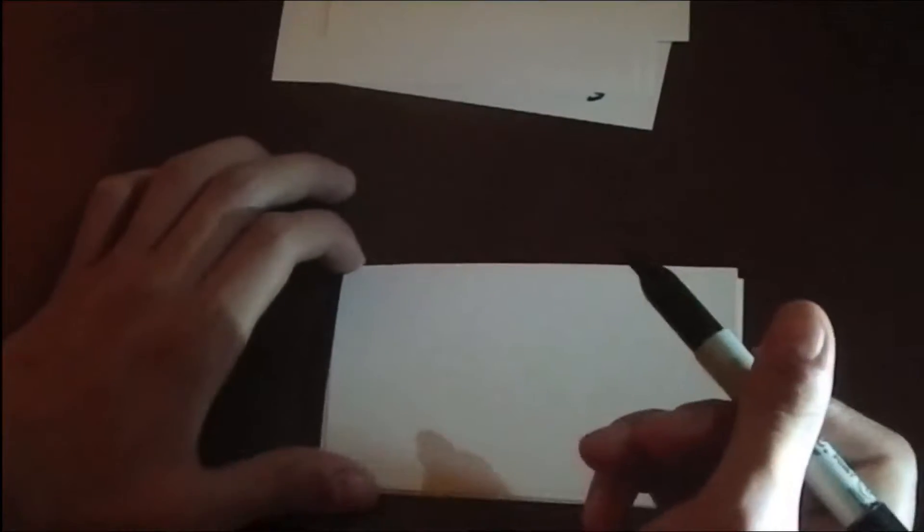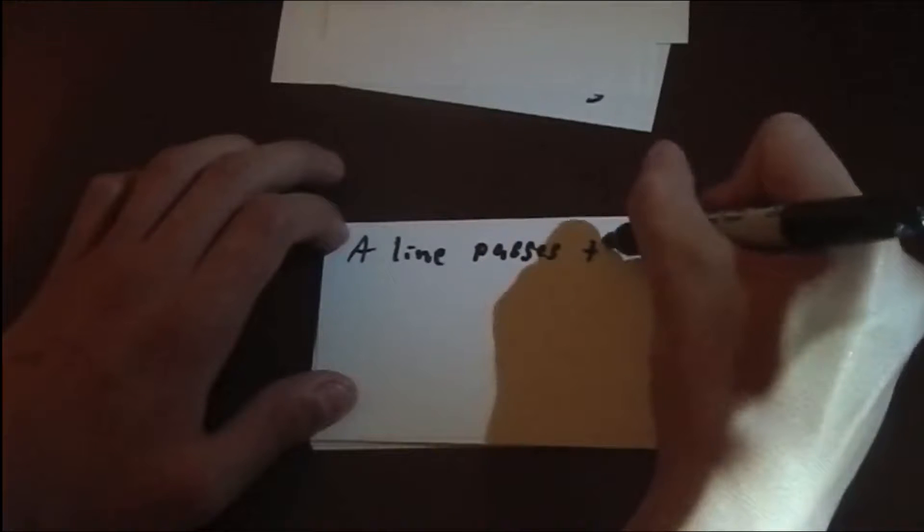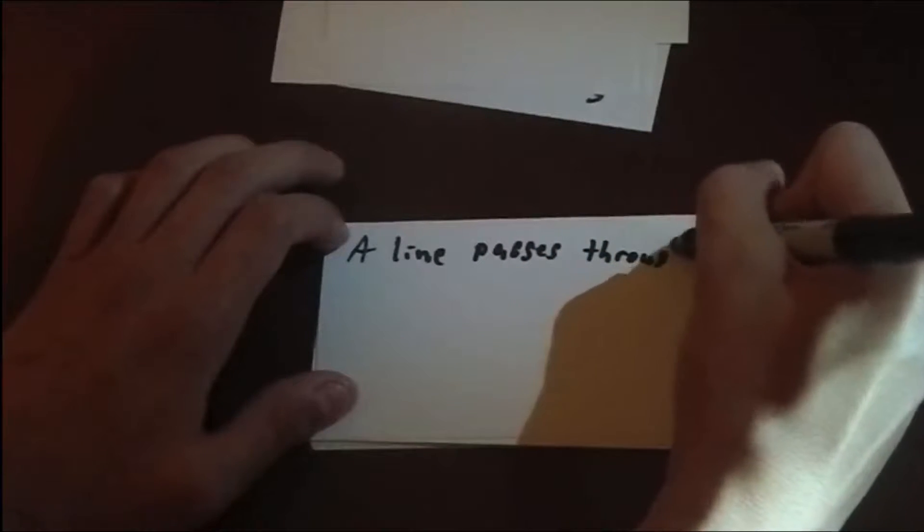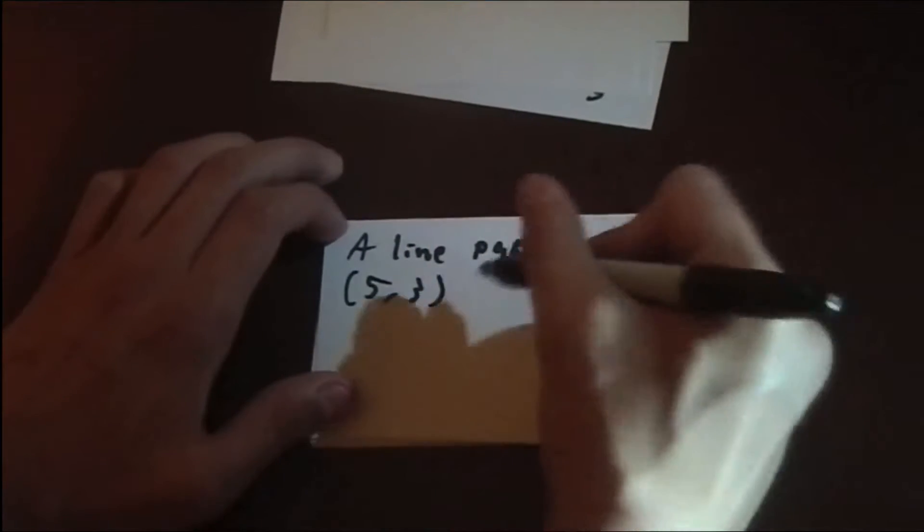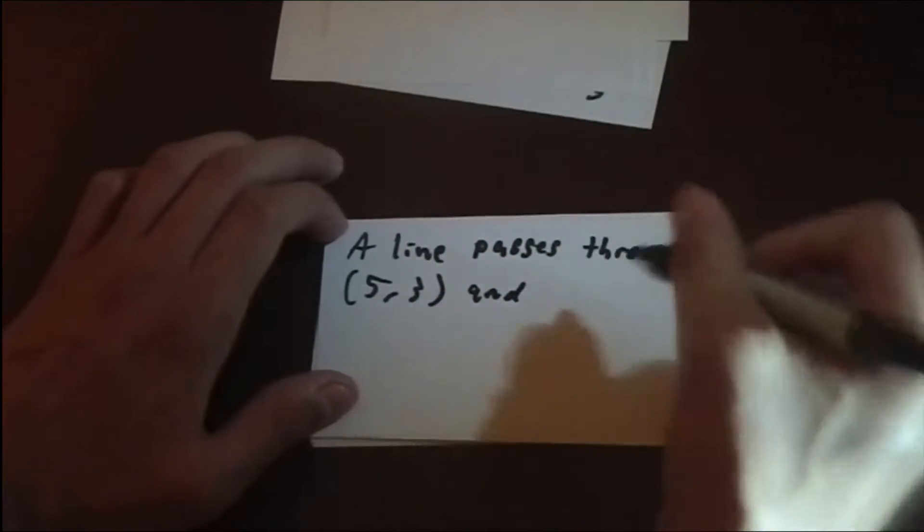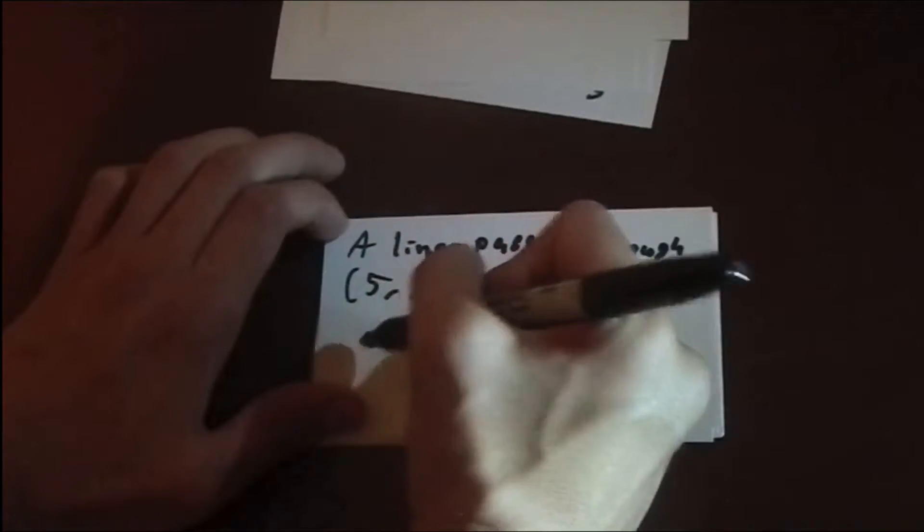You're probably asking when will you use point-slope form. Well, let's say you get a problem like this. A line passes through the points (5, 3) and (11, 7). Write the line's equation in slope-intercept form.